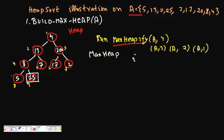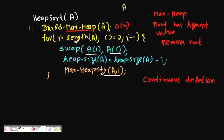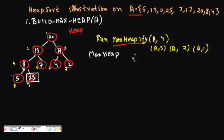After swapping 4 and 20, we swap 4 and 17 since 4 is less than 17. So 17 comes up and 4 goes down. Now this is again a proper Max Heap. We again swap a[1] with a[i], where i is now decremented to 8. The second highest element is 20, so we swap 20 with 5.